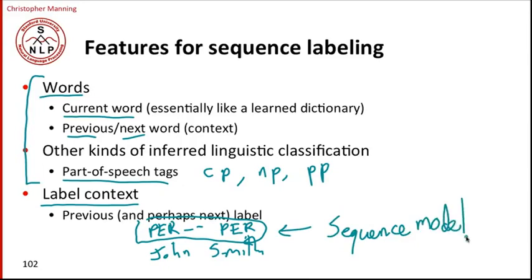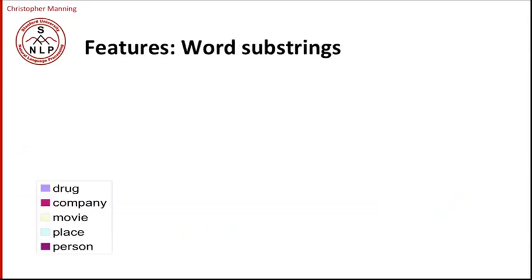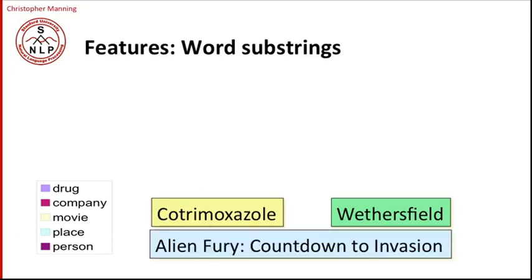But before we get into the details of sequence models, I'd just like to mention a couple of other kinds of features that are a little bit more interesting than just using the words as they are. And these features are really useful for having the models generalize better and work better on rare and unseen words. So one of those kinds of features is character subsequences. So character subsequences of words can be very useful classificatory features. And I'm just going to show a neat example of this that was done by a student of mine, Joseph Smarr, years ago. So he was classifying entities as one of these five classes: drug, company, movie, place, person. And what he asked was how indicative are particular character subsequences.